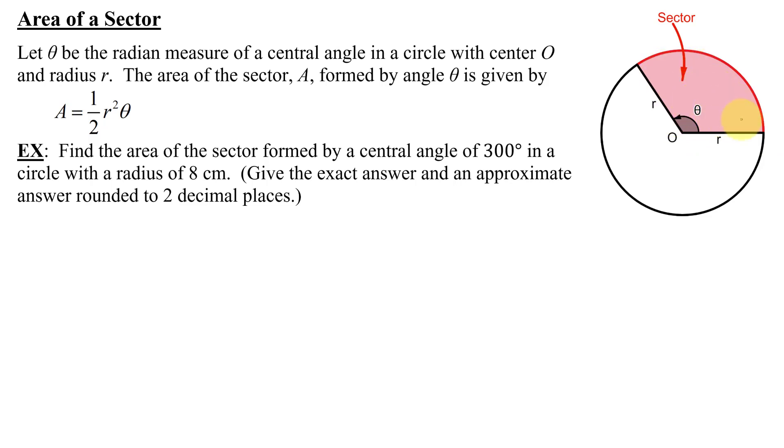The area here, shaded in pink, is called a sector. The area of this sector, formed by angle theta, is given by the formula A equals one-half R squared times theta.